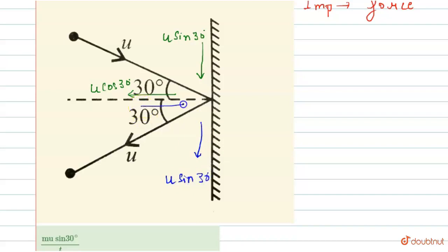Again resolve these components. In this direction this is u sine 30 degree, and in this direction again u cos 30 degree. Now first of all, we find the initial momentum.